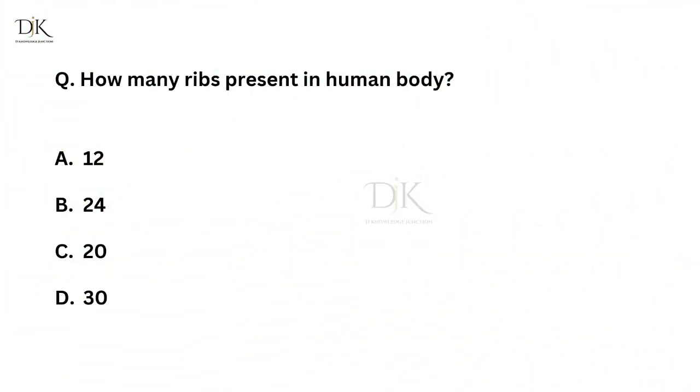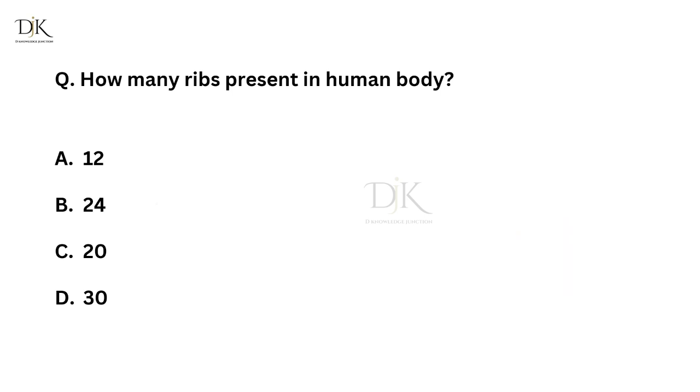How many ribs are present in the human body? Right answer is 24.